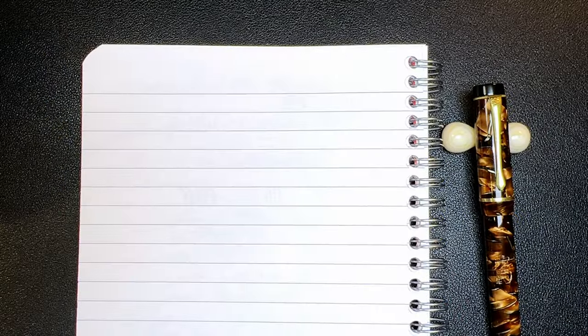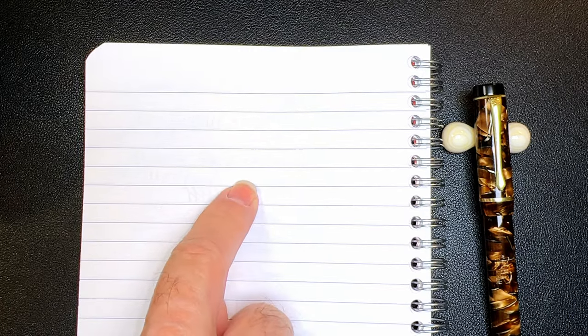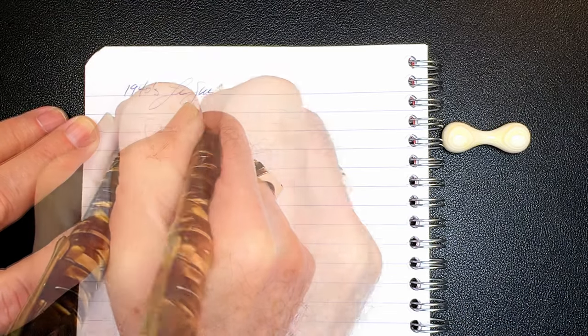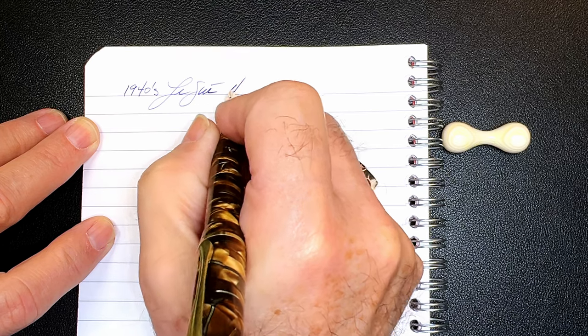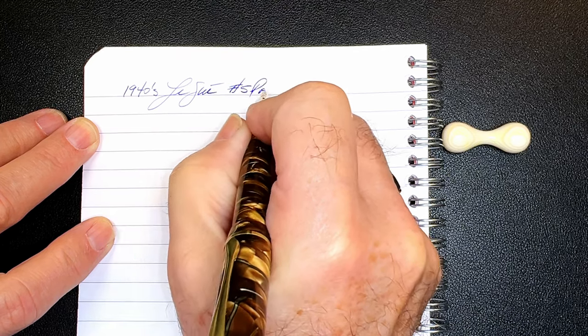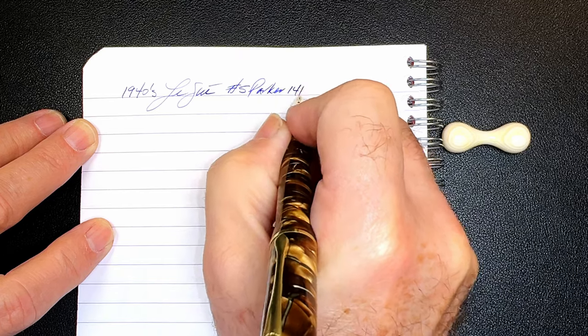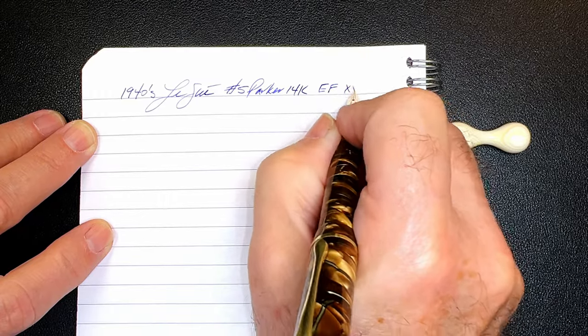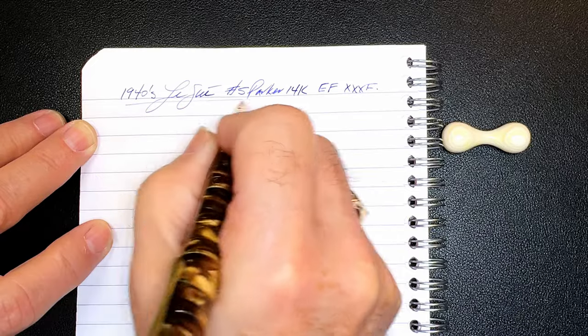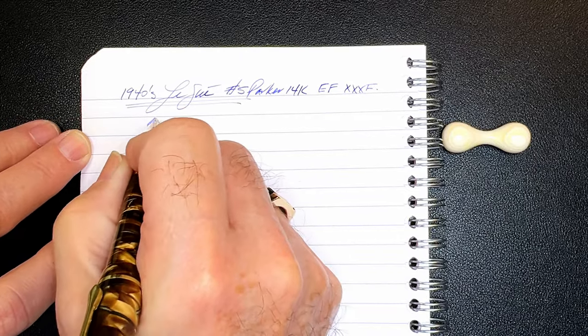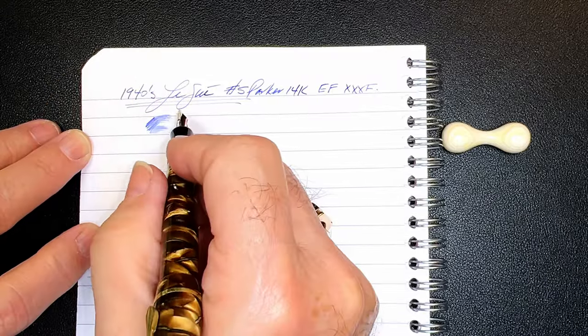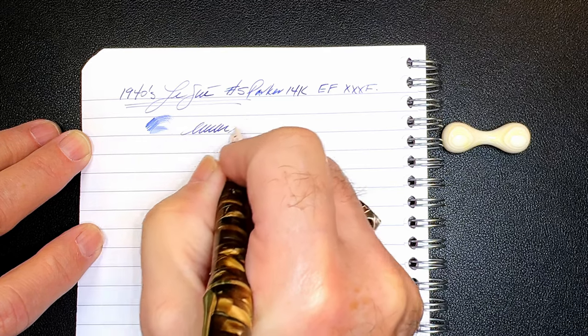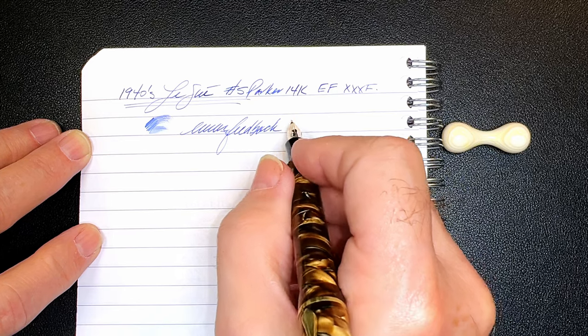And we're back with the writing portion of the review. This is Clairefontaine 90 GSM paper and this is a 1940s LeGay and it has a number 5 size Parker 14 karat gold extra fine. Actually we'll see it's extra extra extra fine gold nib. And let's check the wetness. It's actually not too bad for a very, very fine nib. And there's lots of feedback because this truly is a needle point nib.